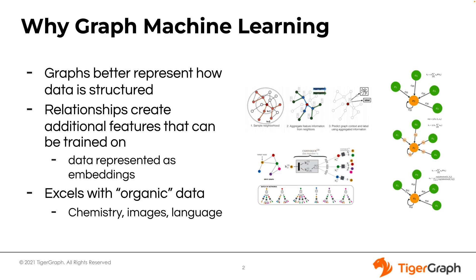One of the areas where graph machine learning really excels is with organic types of data — things like molecules, proteins, and language — structures that naturally flow and fit into each other and can't easily be represented by rows and columns.